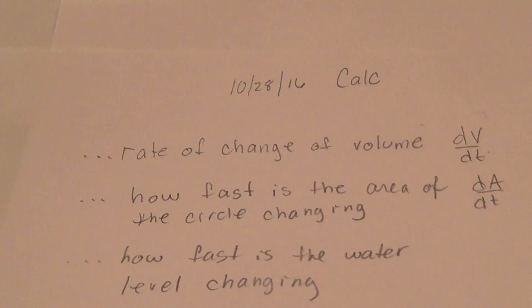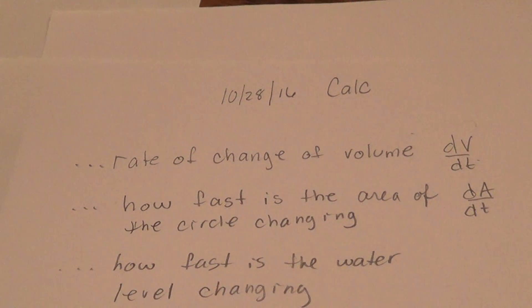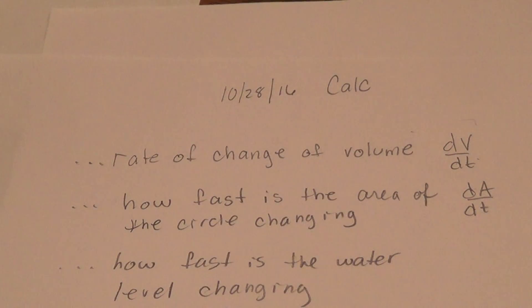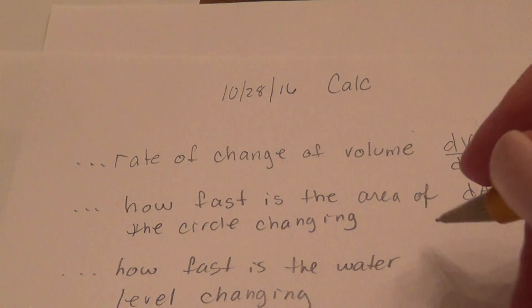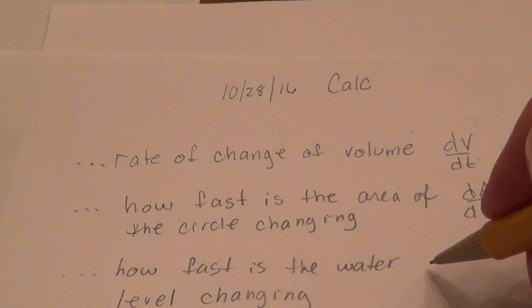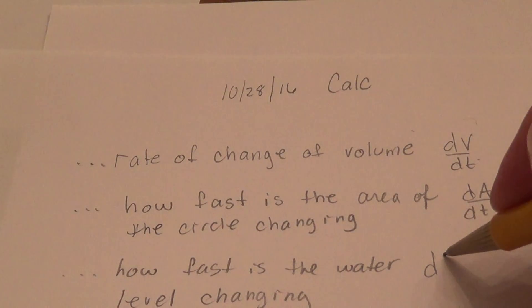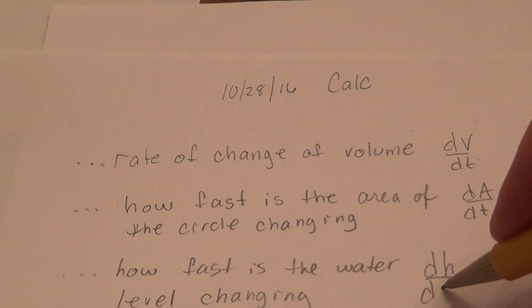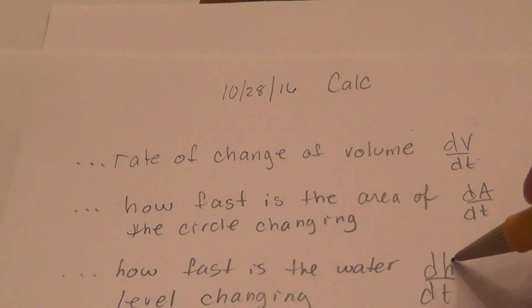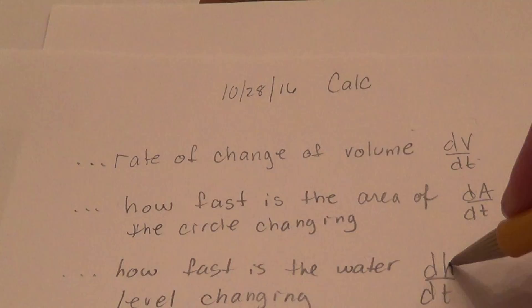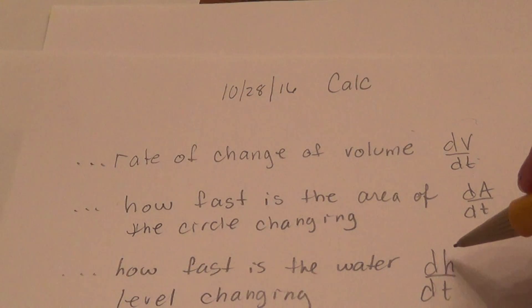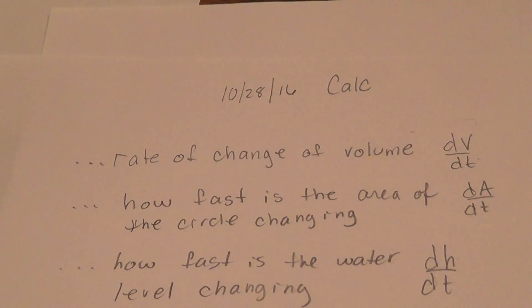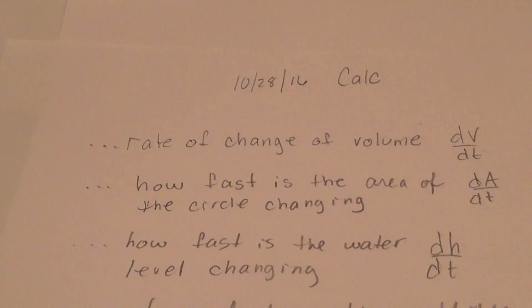So, try this one. How fast is the water level changing? So you get to choose the variable. Sometimes it's like the height of the water in a cone or some other cylinder. So we have dh/dt, the height of the water. You can say dw/dt. Even depth can be used. I've seen dd/dt. So that's also proper.